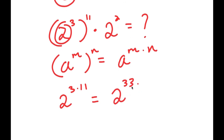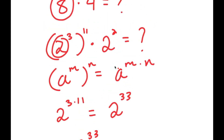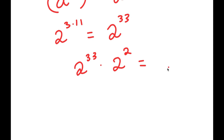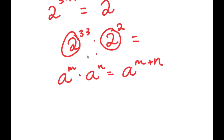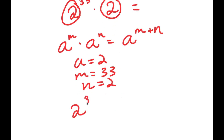So now I have 2 to the power of 33 times 2 squared. The last step is fairly easy because both bases are the same. Using the property that a to the power of m times a to the power of n equals a to the power of m plus n, I think of a as 2, m as 33, and n as 2. So I rewrite this as 2 to the power of 33 plus 2, which equals 2 to the power of 35.